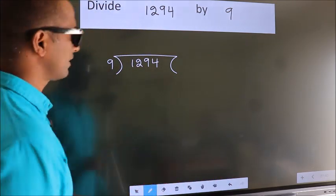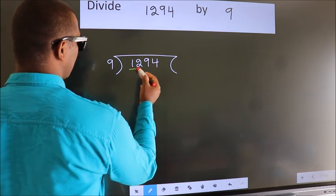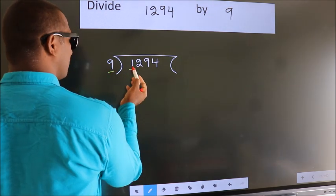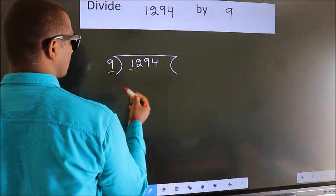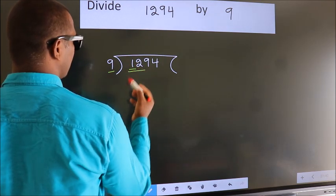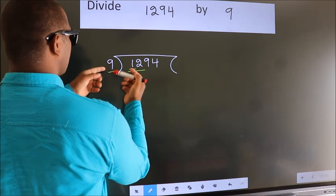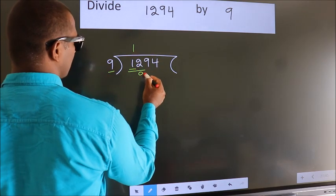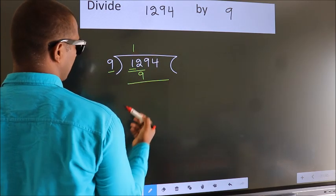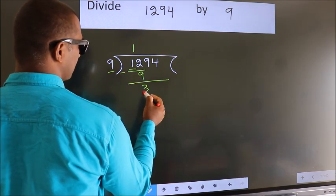Next, here we have 1, here 9. 1 is smaller than 9, so we should take 2 numbers: 12. A number close to 12 in the 9 table is 9 times 1, which is 9. Now we should subtract, we get 3.